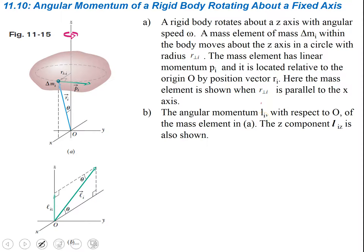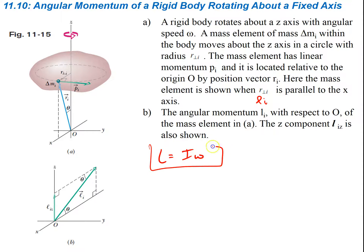The angular momentum L, which is L_i with respect to our origin point at the center of the mass element, also has a z-component shown. The derivation is shown in the book, but because of time constraints, the result is: if you take all these mass elements and look at their moment of inertia, add them all together, they're all going to have the same angular speed omega. So the angular momentum is equal to I times omega — a pretty important equation for this chapter.